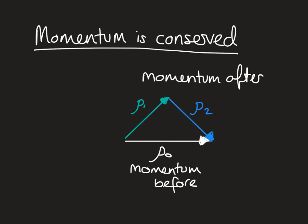Finally, bearing in mind that momentum is conserved — momentum before equals momentum after — we can arrange these vectors. Here's the momentum of M1 after the collision and the momentum of M2 after the collision, and here's the momentum before. We can see that the momentum before equals the momentum after just by rearranging our vectors. That is it for the tutorial. It's now time for some practice questions. Submit any questions via Google Classroom and I will speak to you soon.